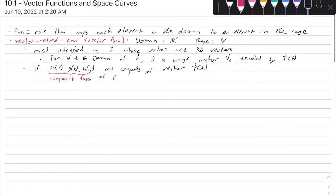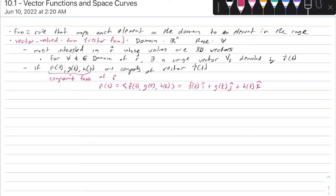Our vector R of T is a vector made up of F of T as the first component, G of T as the second, and H of T as the third. We can also represent this vector in terms of the unit component vectors: F of T times i, plus G of T times j, plus H of T times k. Note that the dependent variable T represents time in most applications, but it can represent anything.